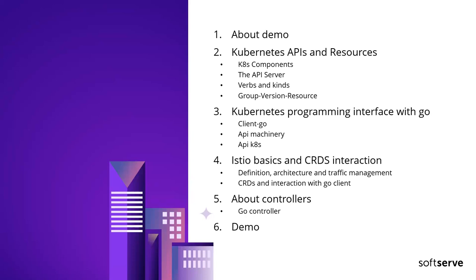This is the schedule for today. First I'm going to talk about the demo, then explain briefly about the Kubernetes API and its resources. Also, how Go is being used with the Kubernetes API. We are also going to use a technology called Istio. Then a brief about controllers, the final demo, and some code exercises showing how the Go language is used for this.